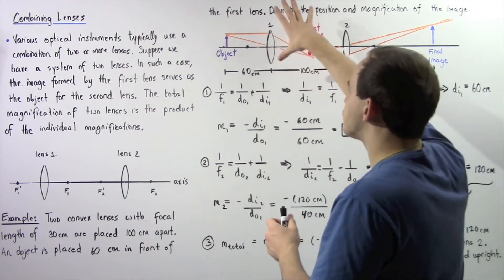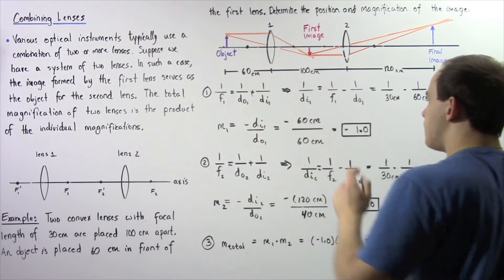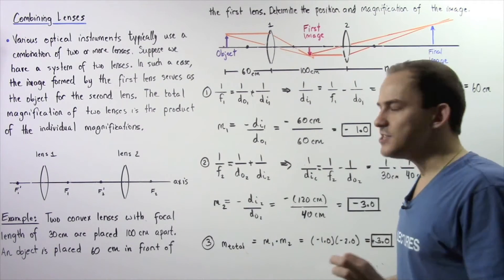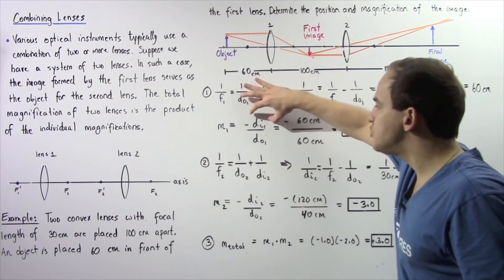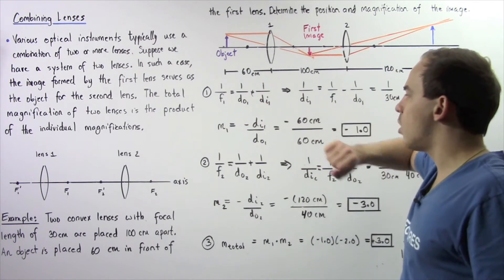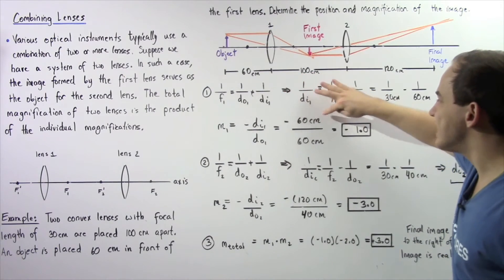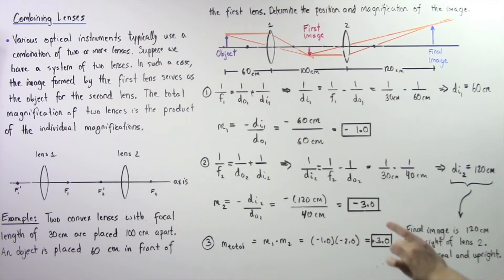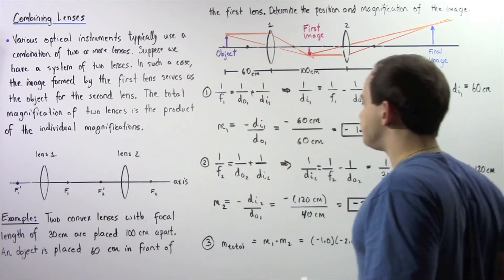The image produced by lens number one is found on the right side — the opposite side of lens number one compared to where our object is located. The magnification of lens one, M1, equals negative of the image distance divided by the object distance: negative 60 centimeters divided by 60 centimeters, giving M1 equal to negative 1.0. This means the size of the image produced by lens number one is essentially the same as our object.